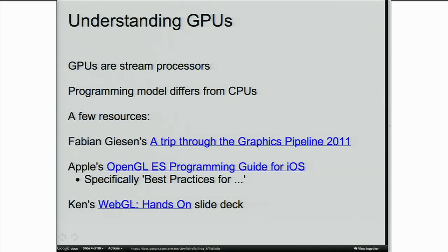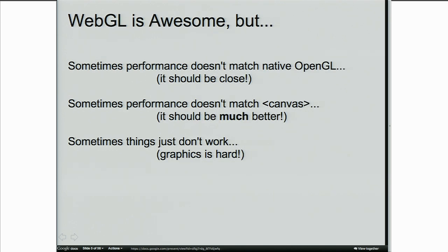To really understand the GPU, this can't be an introductory talk — there's just too much to discuss. A GPU is a stream processor that operates on streams of vertex data flowing down from JavaScript, into the fragment pipeline where lots of pixels are processed on the way to the screen. The programming model is very different from CPU programming. Here are a few resources — the slides are on the web already, so the links are live and you can study them at your leisure.